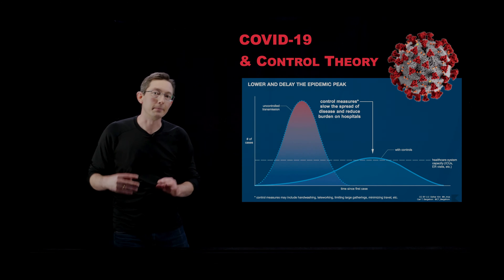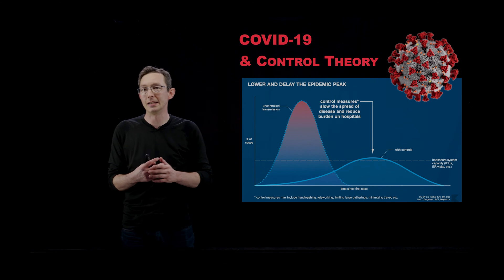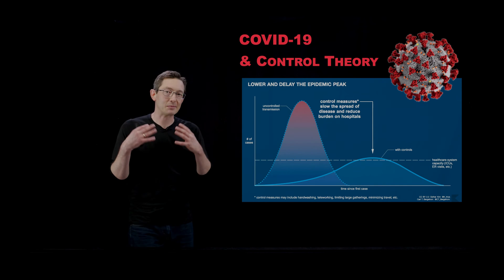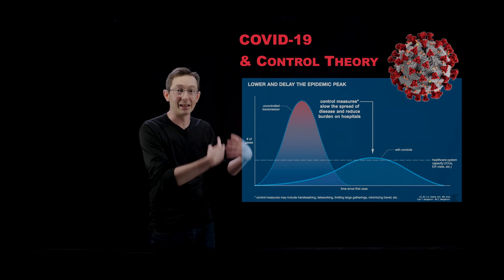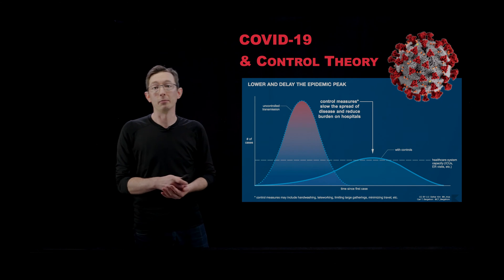Welcome back. I'm Steve Brunton and this is another video in our lecture series on understanding COVID-19 through the lens of control theory. Today I'm going to specifically talk about the importance of measuring our system, of sensing and measuring our system to make better control decisions and to inform better models.